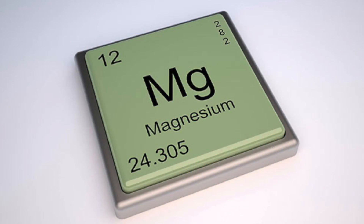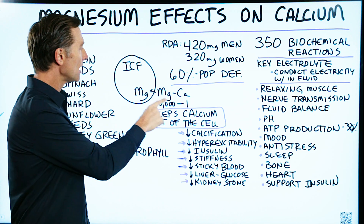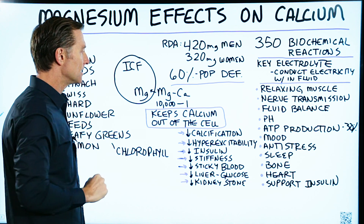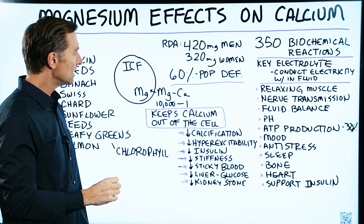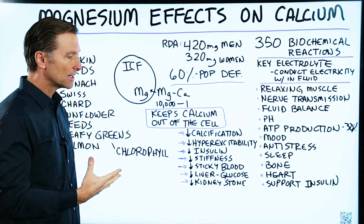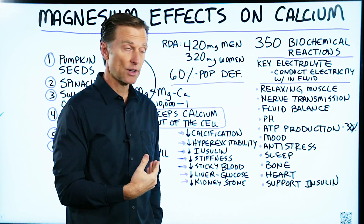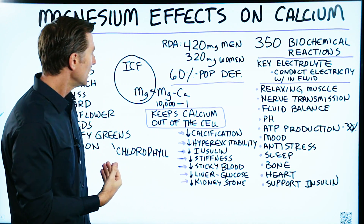One of the really important things about magnesium is keeping calcium outside the cell. If there's enough magnesium inside the cell, it can prevent calcium from going inside the cell and creating damage.